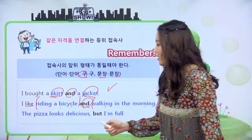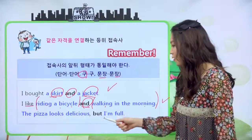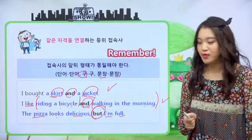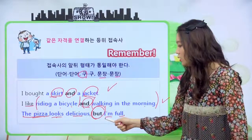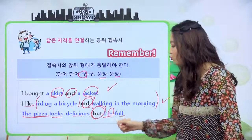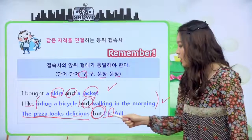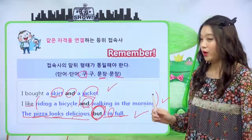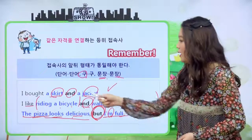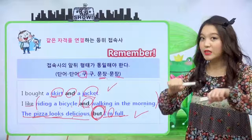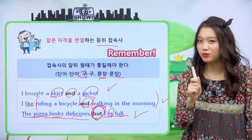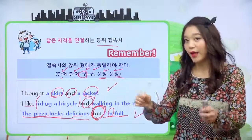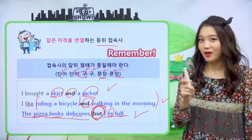문장과 문장을 연결한 걸 한번 볼게요. The pizza looks delicious but I'm full. but을 사이에 두고 그 피자는 맛있어 보이지만 나는 지금 배가 불러 라는 문장이에요. 주어동사가 있는 두 문장을 but이라는 접속사가 가운데서 연결해 주죠. 문장과 문장, 같은 형태가 왔네요. 이것도 맞는 문장입니다. and, but, or, so가 같은 위치 같은 자격을 연결한다고 해서 등위 접속사라고 부르는 거예요.